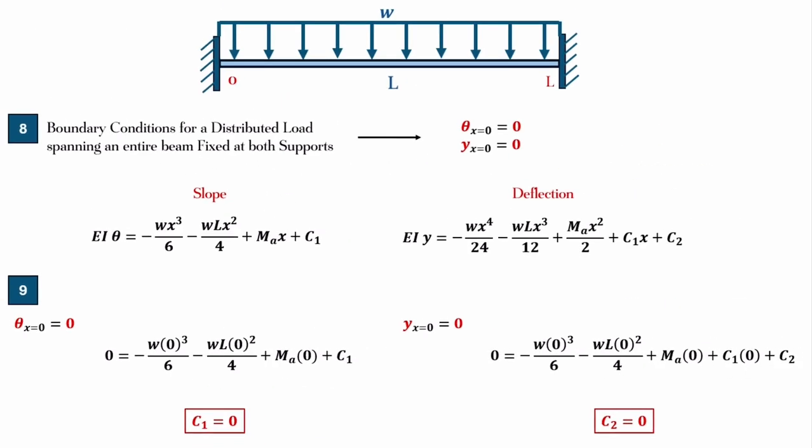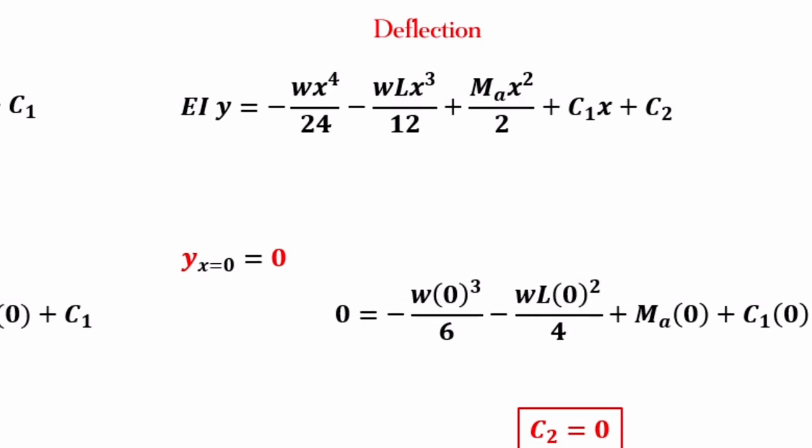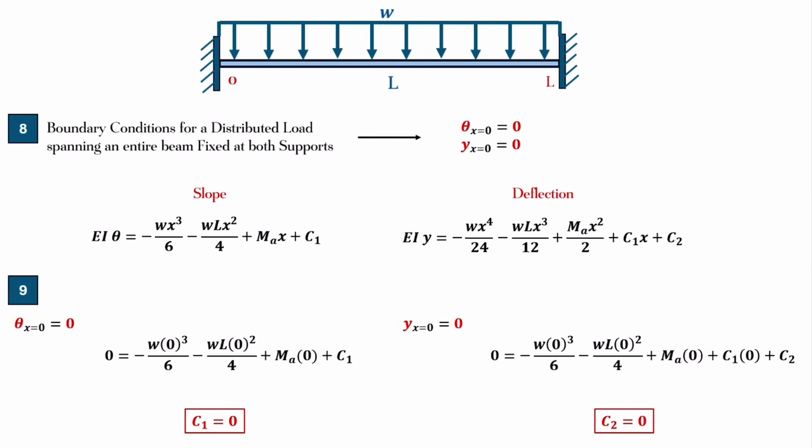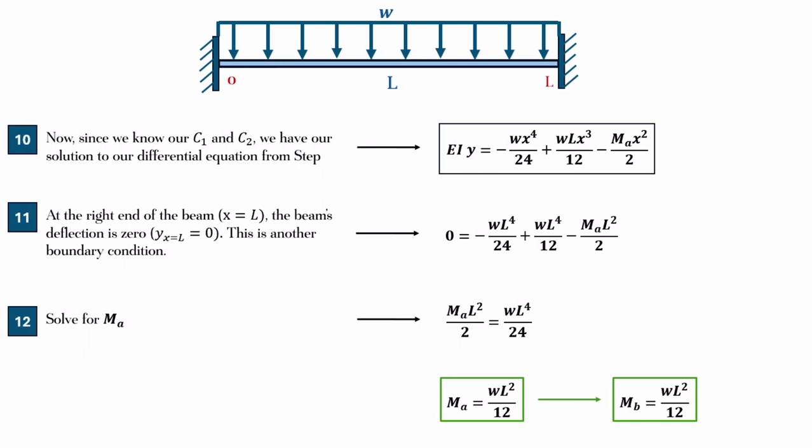And then, similarly, for the deflection curve, now that we have C1, we could apply the second boundary condition. And for every X that you see, we're going to plug in zero. We're going to be using Y at X equals zero equals zero, so every X goes to zero, or is zero, and then Y is zero. So, that's what you see at the bottom right of the screen, and our C2 is zero. So, in this case, we determined C1 and C2, so now that we have that, we're able to plug it in to that previous step, the deflection curve.